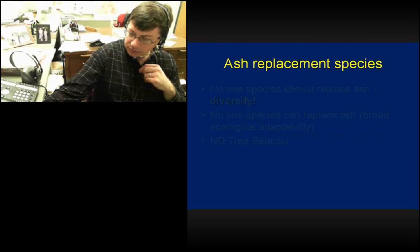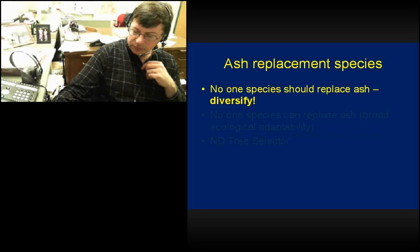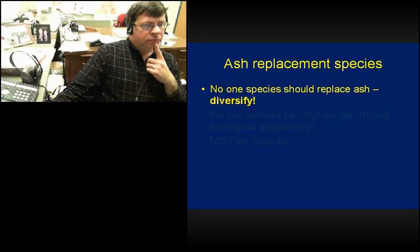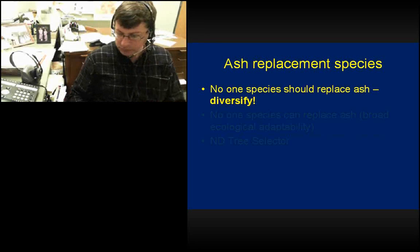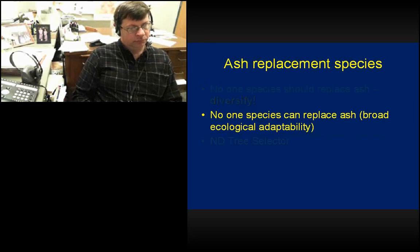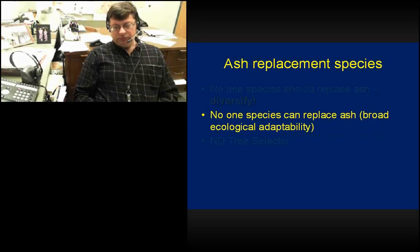Ash replacement species: what can we use to replant? First — no one species should replace ash. Diversify. That's how we got in this mess in the first place: ash was the species used to replace American elm, and now there's an ash pest. Green ash is so broadly adapted — it handles drought and flooding, salty soils, and nice soils too. Finding a species that can do all of that is next to impossible, and that's why it was over-planted.